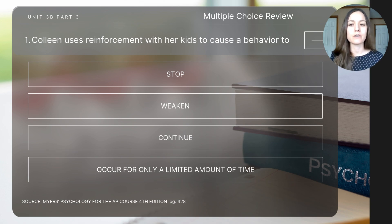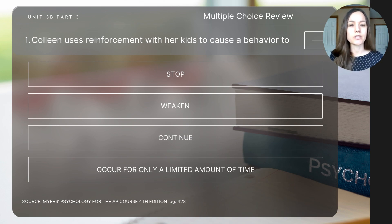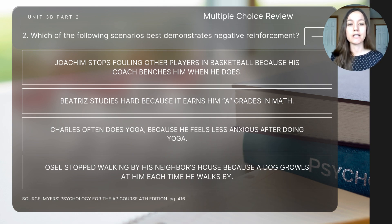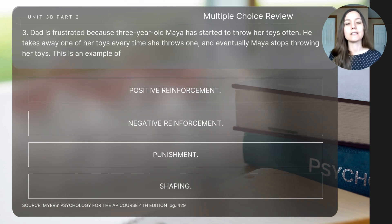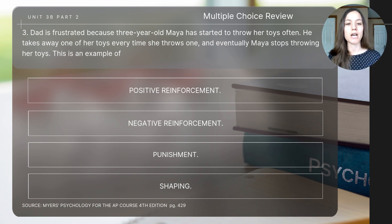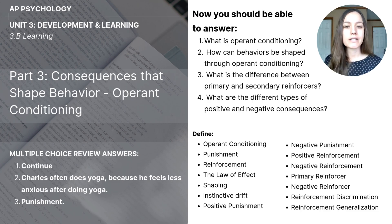Now let's finish today's video with a few review questions. Remember to pause the video after I read each question so you can determine the answer. Question one: Colleen uses reinforcement with her kids to cause a behavior. Question two: Which of the following scenarios best demonstrates negative reinforcement? Question three: Dad is frustrated because three-year-old Maya has started to throw her toys often. He takes away one of her toys every time she throws one, and eventually Maya stops throwing her toys. This is an example of...